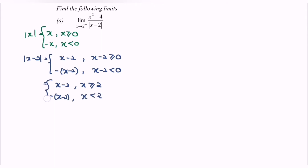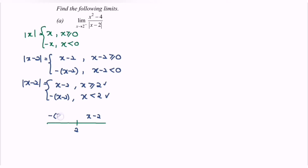Here is the definition for the absolute value of x minus 2. I'm going to illustrate this on a number line. For x greater than or equal to 2, that is to the right of 2, the function is x minus 2. For x less than 2, to the left, the function is negative bracket x minus 2. Now we refer to the question.